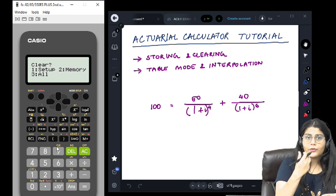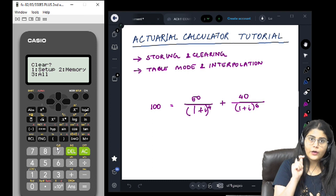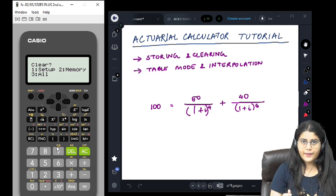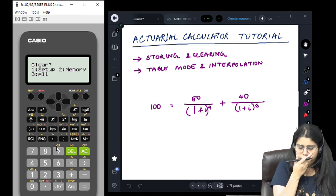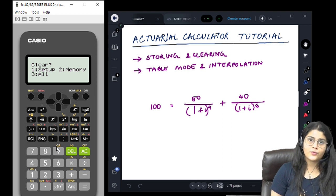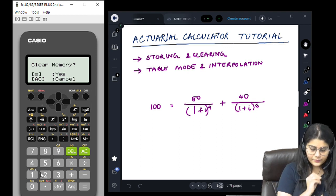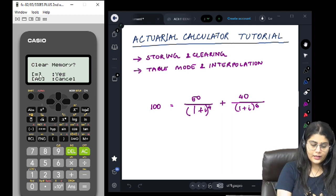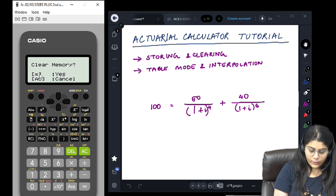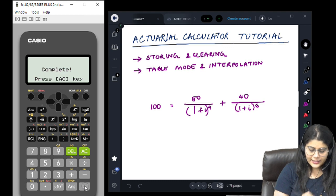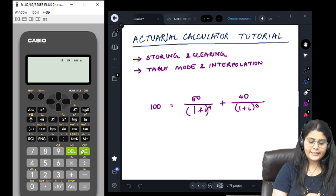For memory, let's say right now we just want to clear the memory. I am pressing 2. Equal to means yes, AC means cancel. I want to clear the memory so I press equal to. It is done.